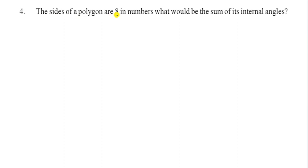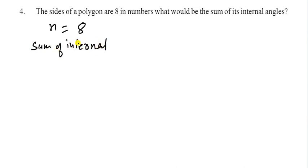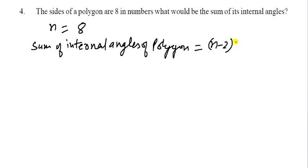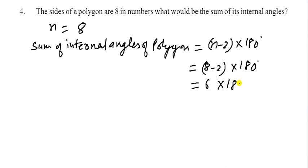Question number 4: the sides of a polygon are 8 in number. What would be the sum of internal angles? The formula is: sum of internal angles = (n − 2) × 180°. With n = 8: (8 − 2) × 180° = 6 × 180° = 1080°. So 1080° is the answer.